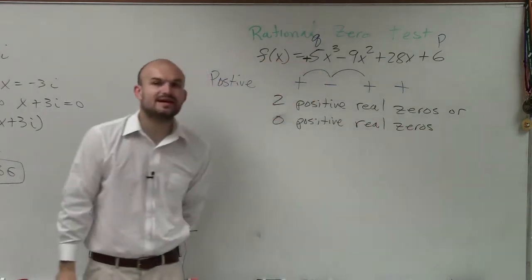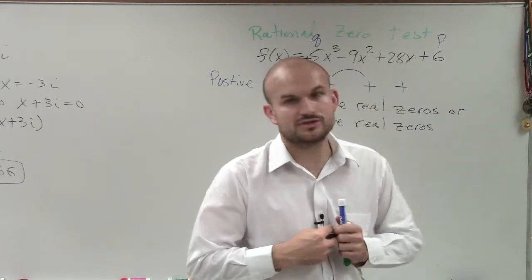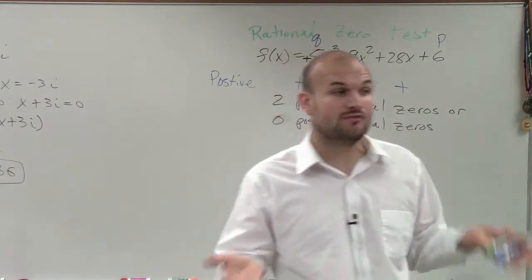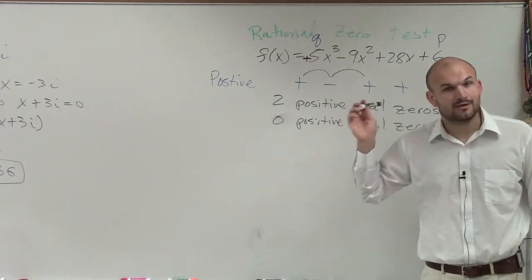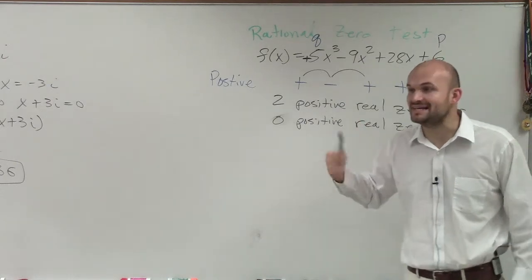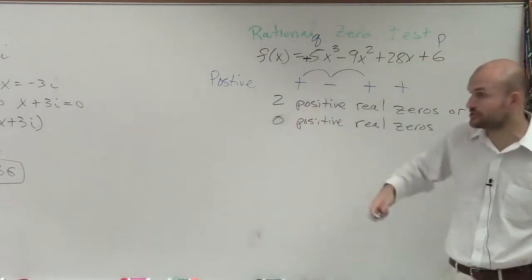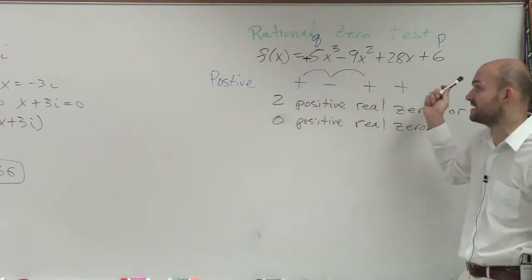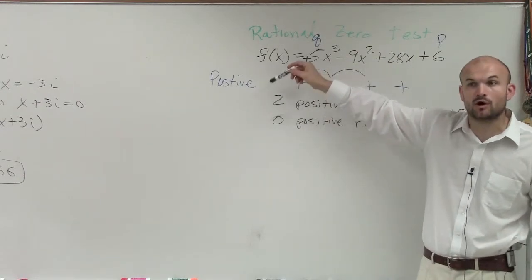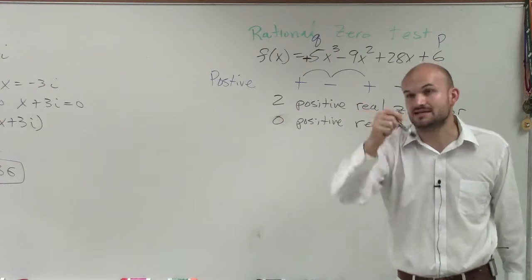And the reason why that's the case is because Descartes' rule of signs says the number of real zeros you have is always going to be the number of alternating signs, which we had are two, or minus an even number. Well, if I take two and I minus two, that gives me zero. So therefore, this polynomial, the zeros of this, it's possible for it to have two real zeros or no real zeros. And we won't know that until we actually investigate.